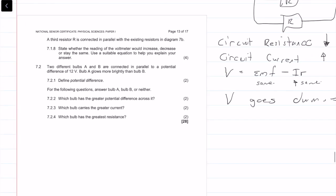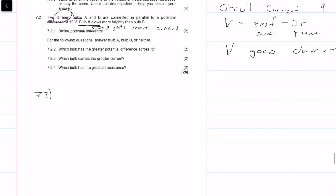Question 7.2 says two different bulbs A and B are connected in parallel to a potential difference of 12 volts. Bulb A glows more brightly than B. What does this mean? It gets more current. Let's draw out our circuit. We have 12 volts, we have got a bulb A and a bulb B, and this is more bright than that. Now we can answer some questions.